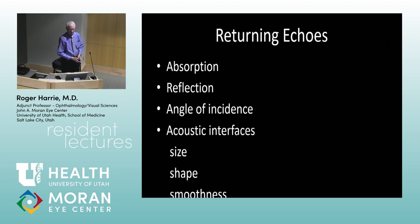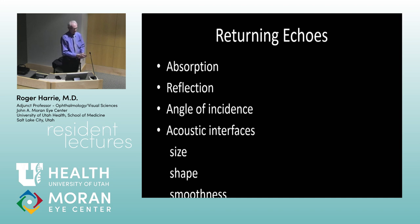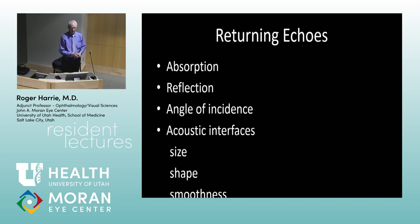Sound behaves like light — it can be absorbed, reflected, and refracted. Things that affect the ultrasound image include: how you hold the probe, angle of incidence following Snell's Law, and interface characteristics including size, shape, and smoothness. The lens absorbs some sound energy, which is why axial views through the lens give lower resolution.